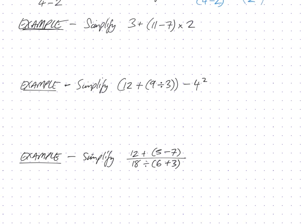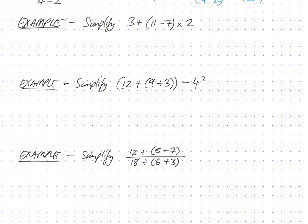Let's simplify: 3 plus (11 take 7) times 2. Remember BEDMAS. B — there are brackets: 11 take 7 is 4, so we get 3 plus 4 times 2. E — no exponents. D — no division. M — yes, there is multiplication: 4 times 2 is 8, giving 3 plus 8. A — yes, addition: 3 plus 8 is 11. No subtraction. So the answer is 11.